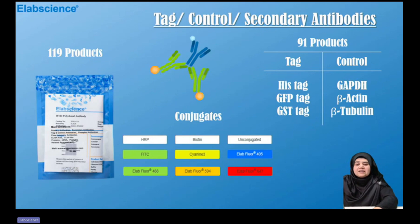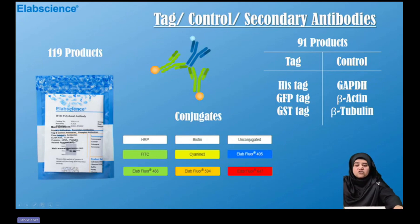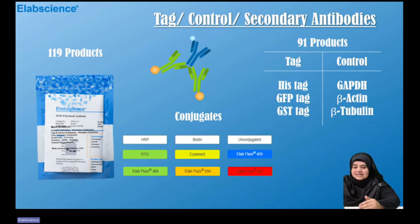Secondary antibodies bind to the primary antibodies. E-Lab Science offers various high-quality conjugated and unconjugated secondary antibodies applicable in fluorescence detection of the primary antibody, and suitable for conventional applications such as immunofluorescence, immunohistochemistry, western blot, and flow cytometry. The expression level of internal reference proteins and tag proteins can provide a reference for changes in target protein expression levels, ensuring changes are due to sample differences and not experimental procedures.